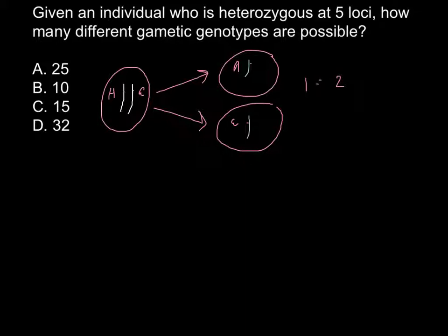Let's consider a situation when we have two pairs of chromosomes. So, once again, we have a diploid organism with two pairs of chromosomes, and here would be capital A, small a, and another one would be capital B, small b.